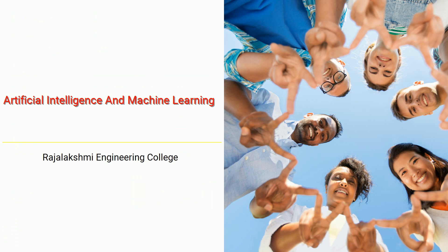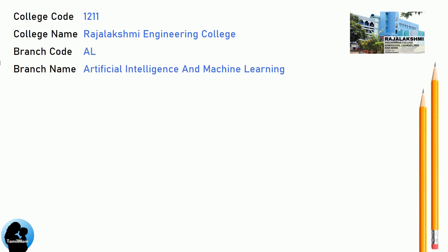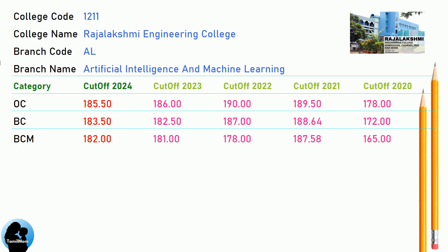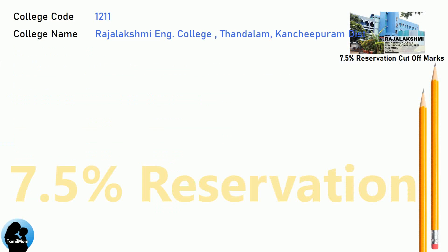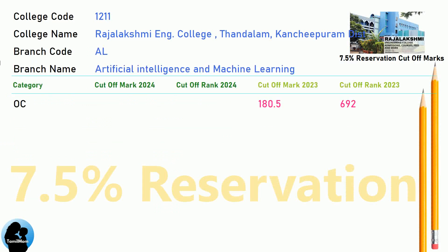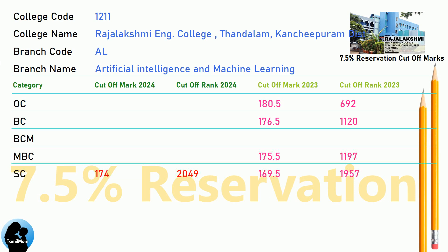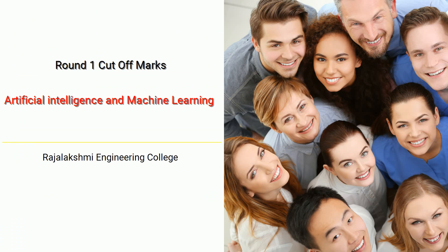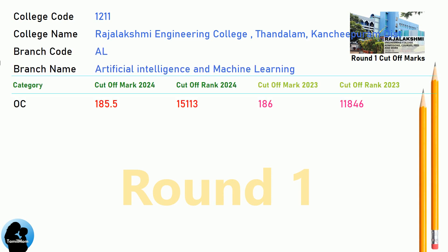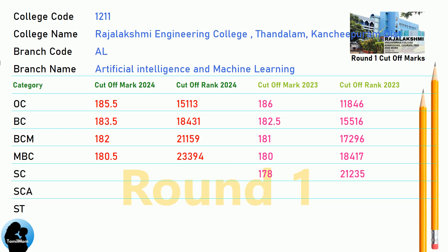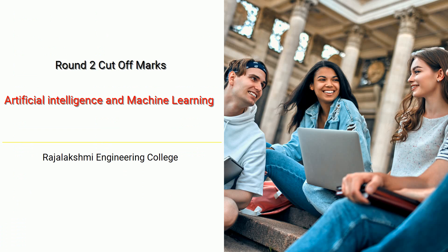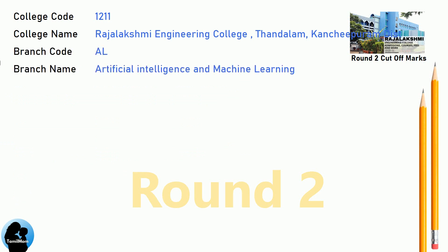DNA Cut-Off for Raj Lakshmi Engineering College in Artificial Intelligence and Machine Learning. BNEA 7.5 Reservation Cut-Off for Raj Lakshmi Engineering College in Artificial Intelligence and Machine Learning. DNA Round 1 Cut-Off for Raj Lakshmi Engineering College in Artificial Intelligence and Machine Learning. BNEA Round 2 Cut-Off for Raj Lakshmi Engineering College in Artificial Intelligence and Machine Learning.